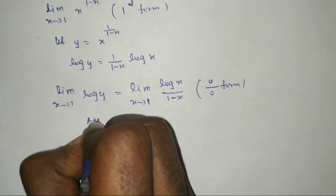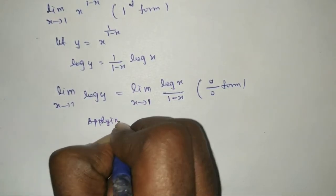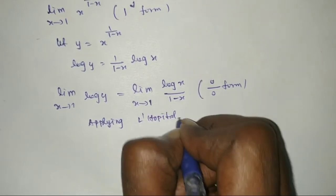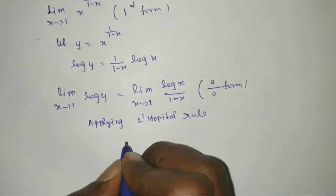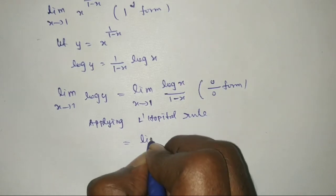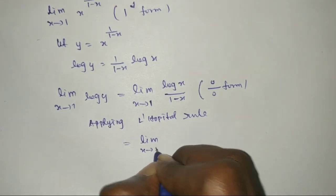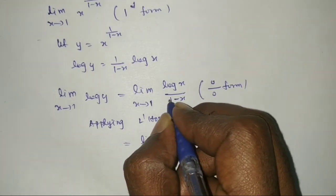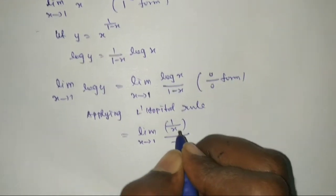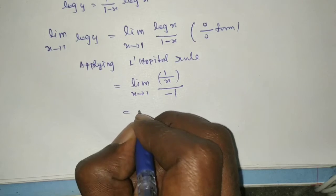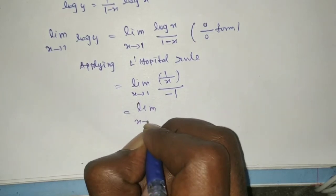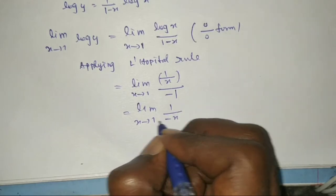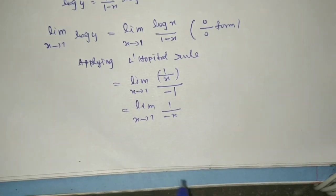Applying L'Hôpital's rule: differentiate numerator and denominator. The numerator log x differentiates to 1/x. The denominator (1 - x) differentiates to -1. So we have the limit as x tends to 1 of (1/x) / (-1), which equals 1/(-x). Substituting x = 1 gives the value minus 1.